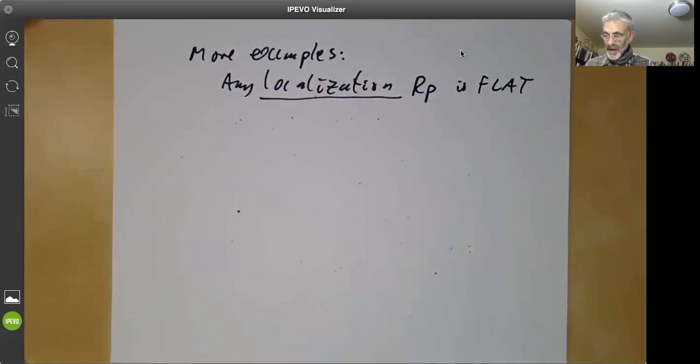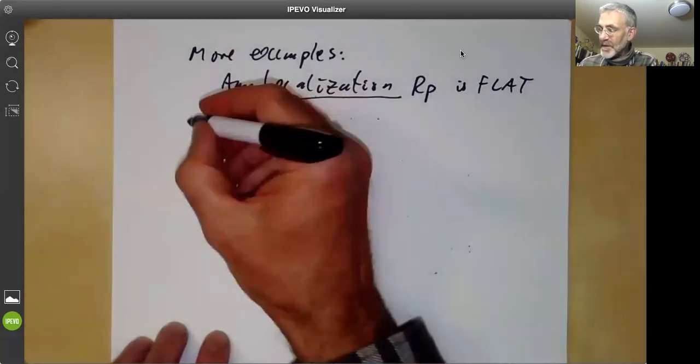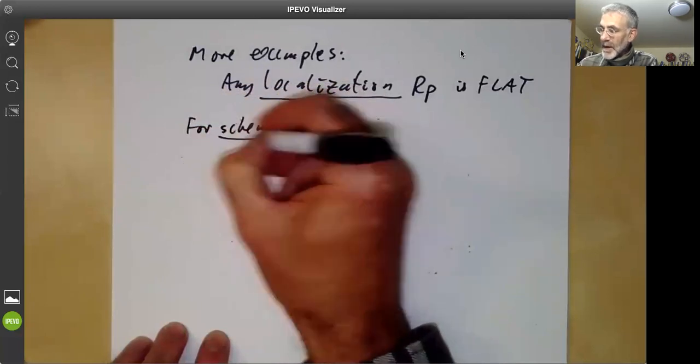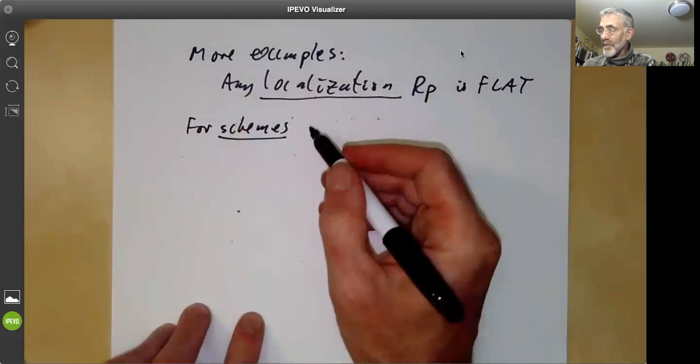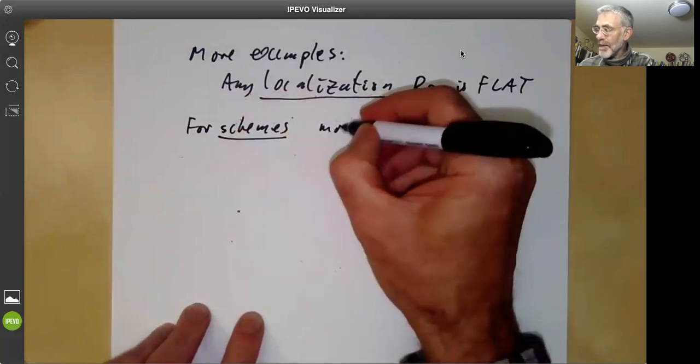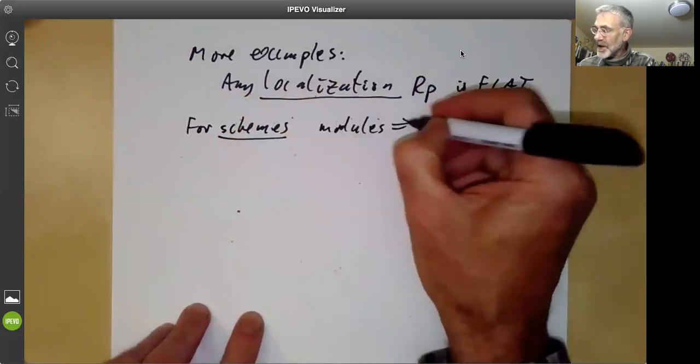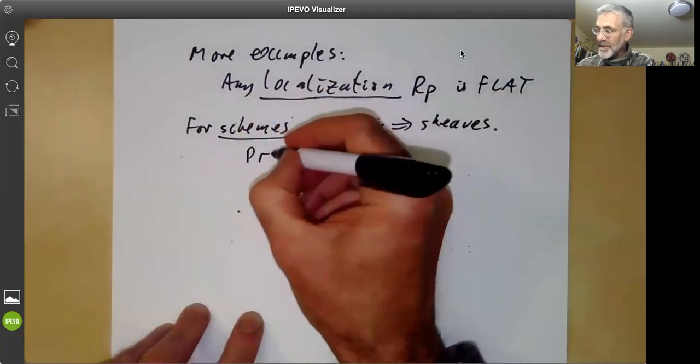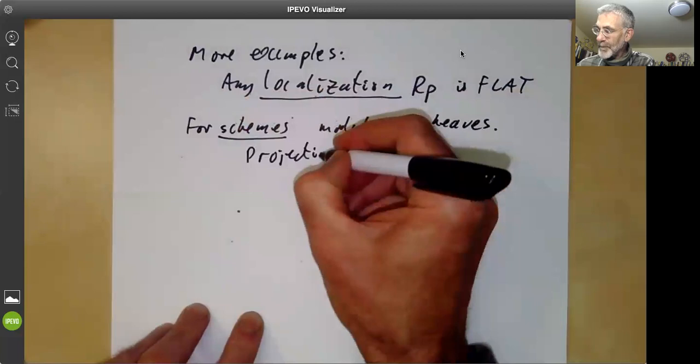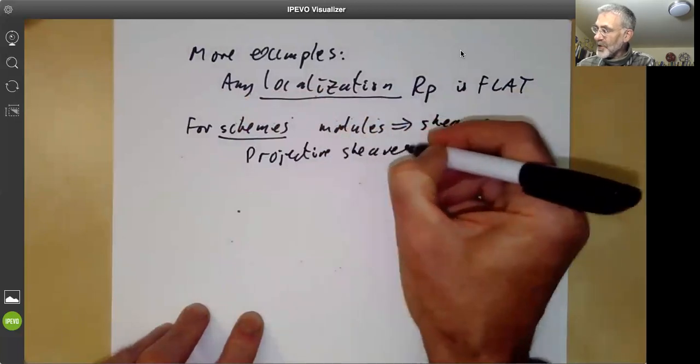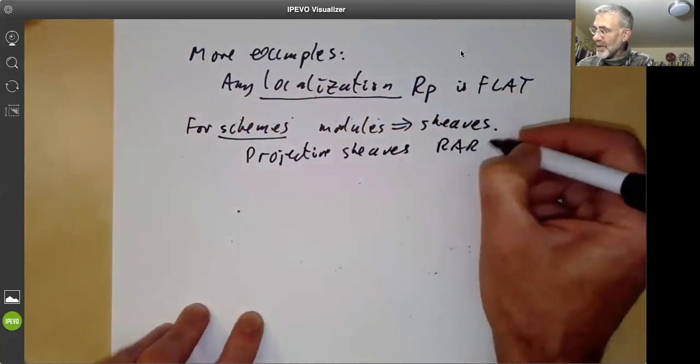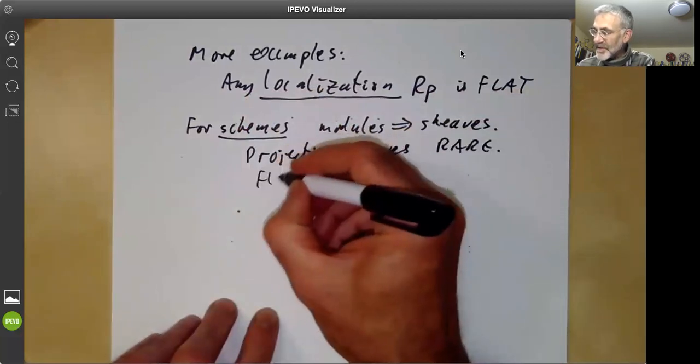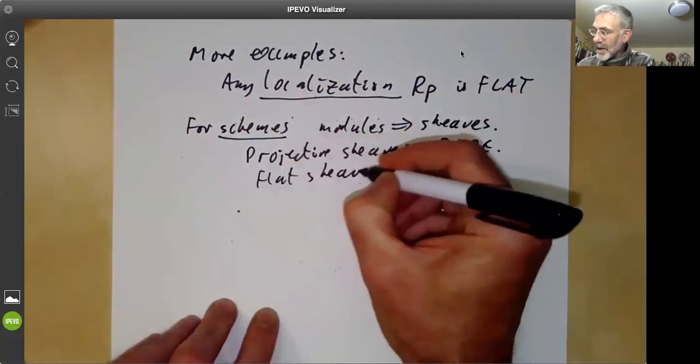And we should also point out that over for schemes, the analog for modules is sheaves. And projective sheaves are pretty rare, at least if you're working with non-affine schemes, whereas flat sheaves are common.